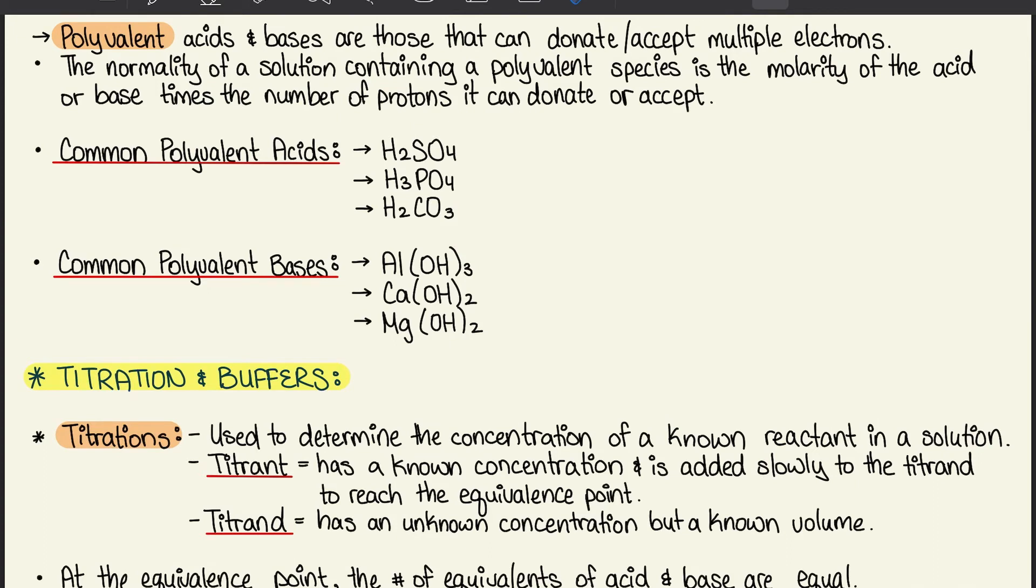Common polyvalent acids would be H2SO4, H3PO4, and H2CO3. Common polyvalent bases would be Al(OH)3, Ca(OH)2, and Mg(OH)2. Just keep those in mind.